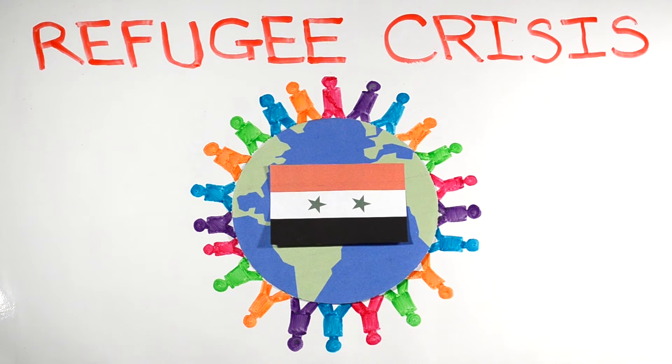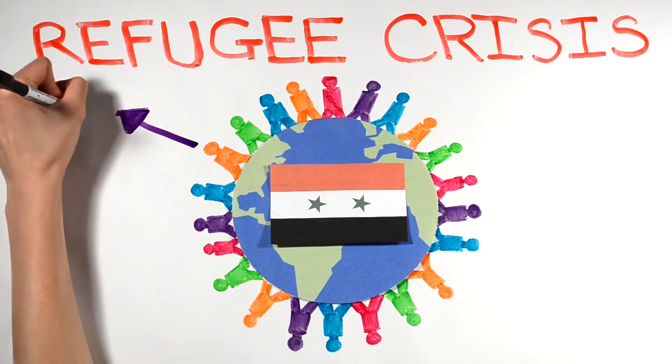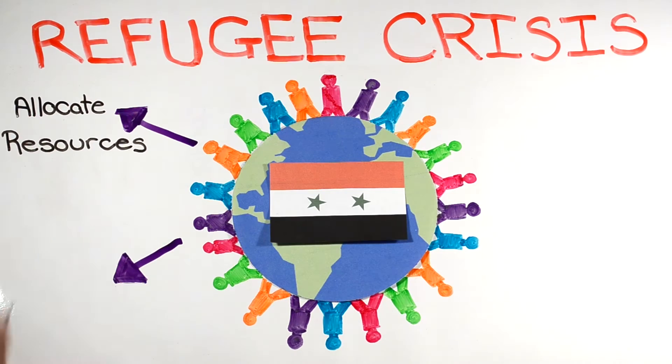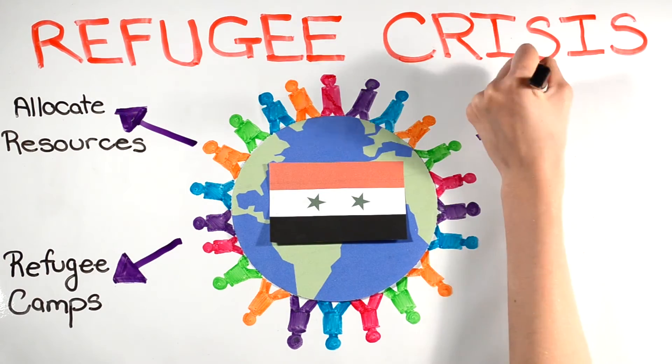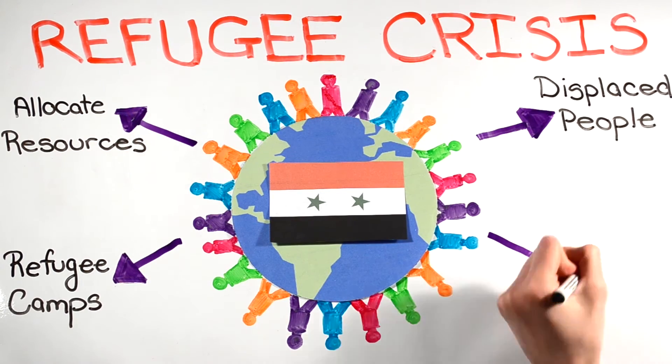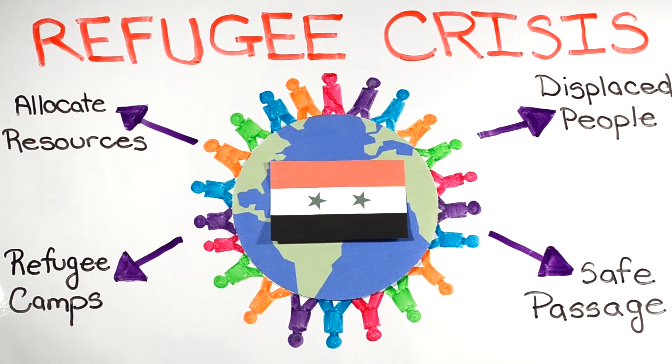This crisis has many problems, such as allocating resources from humanitarian aid, constructing and maintaining refugee camps, relocating displaced people, and ensuring that people have safe passage to welcoming countries.